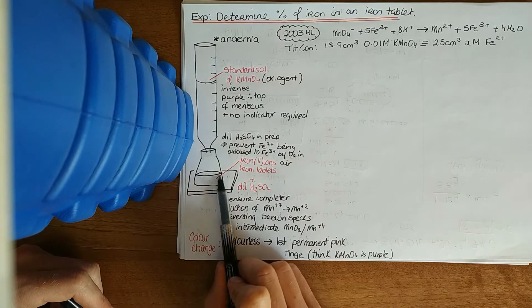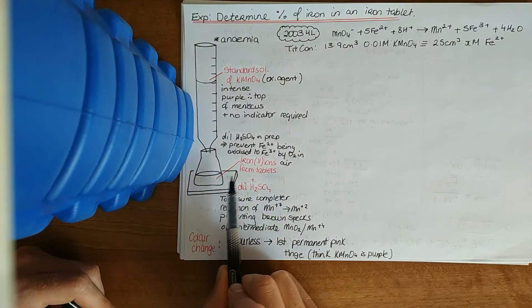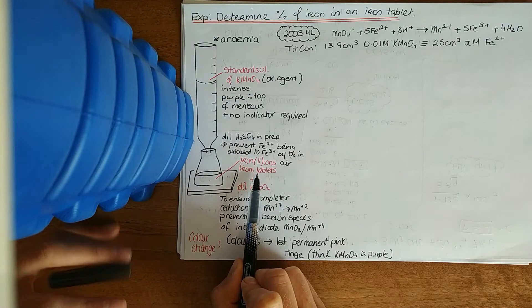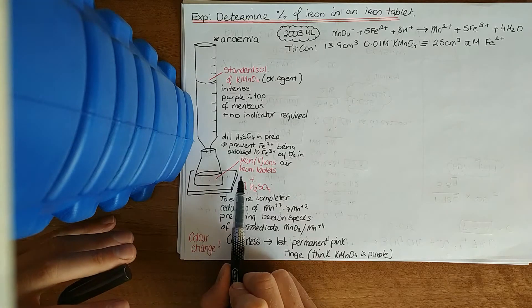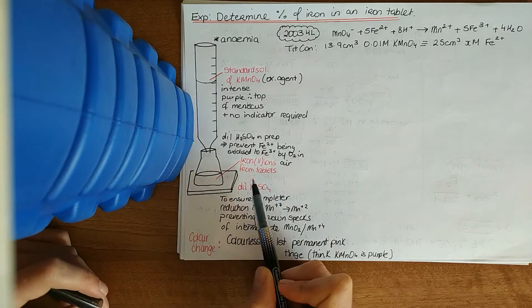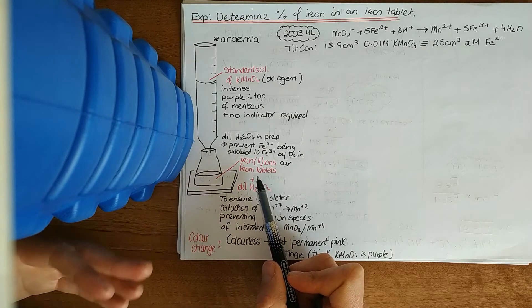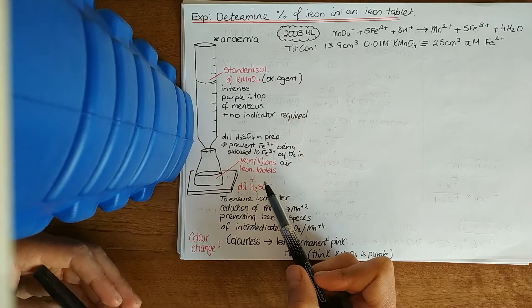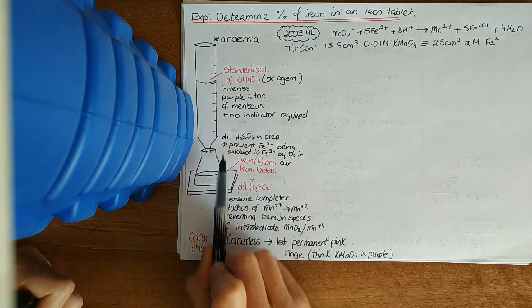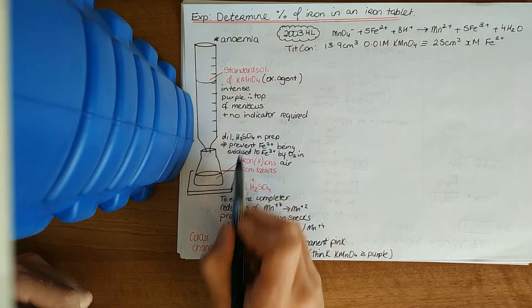In the preparation of this iron 2 solution, in the last experiment you use ammonium iron 2 sulfate. In this experiment, we use iron tablets. You'd weigh them out from a weigh boat to an electronic balance, crush them using a pestle and mortar. In this preparation, you add in some dilute sulfuric acid, dilute H2SO4.